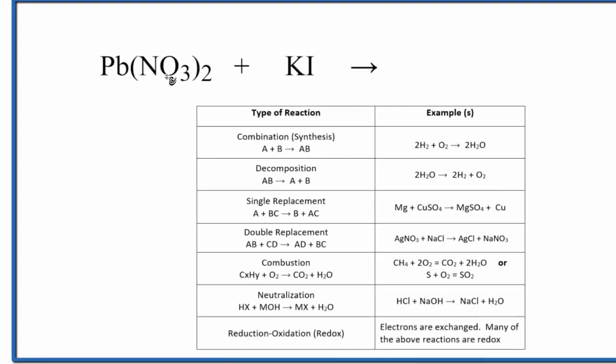In this video, we'll write the type of reaction for Pb(NO3)2 plus KI. That's lead two nitrate plus potassium iodide.